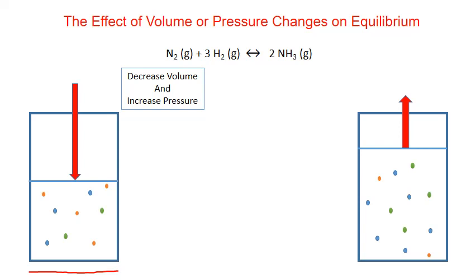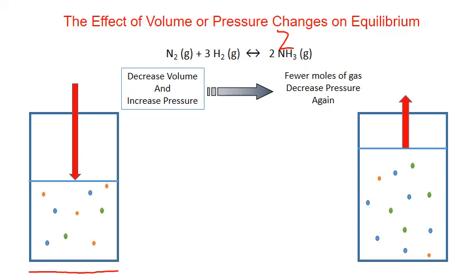According to Le Chatelier's Principle, if we lower the piston to decrease the volume — which also increases pressure — the chemical system is going to shift to minimize this disturbance and decrease pressure again. The way it does that is by shifting towards the side of the reaction that has fewer moles of gas. In this case, that's the product side with two moles of ammonia gas, compared to the reactant side which has one mole of nitrogen plus three moles of hydrogen, totaling four moles of gas. So the reaction shifts to the product side to decrease pressure.